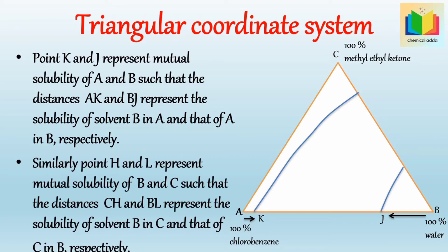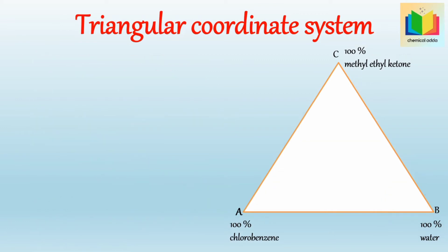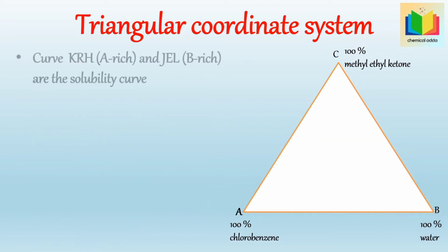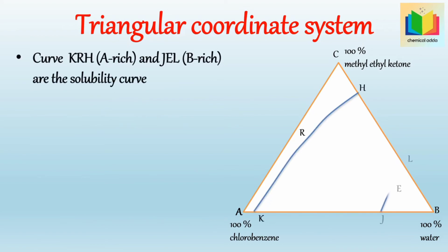Similarly, points H and L represent the mutual solubility of B and C, such that the distances CH and BL represent the solubility of solvent B in C, and that of C in B, respectively. In this triangular diagram, curve KRH (A-rich, meaning more chlorobenzene) and curve JAL (B-rich, meaning more water) are the solubility curves.